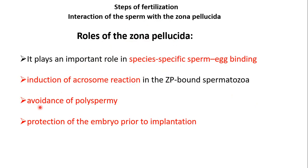The zona pellucida is also important in the avoidance of polyspermy — meaning it helps prevent more than one sperm cell from fertilizing the egg. Additionally, it has a role in protecting the embryo prior to implantation. Before the embryo implants in the uterus, this layer surrounding the oocyte protects the zygote and the early forming embryo.